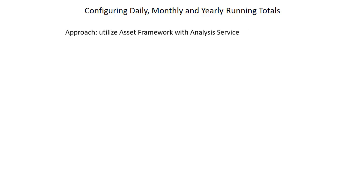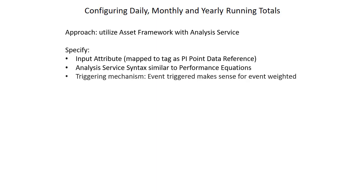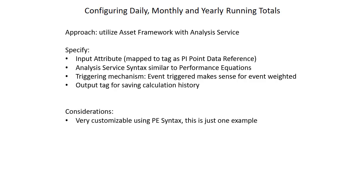The approach we're going to use is to utilize Asset Framework with Analysis Service, or asset analytics. We're going to specify the input attribute, which is mapped to a PI tag as a PI point data reference. The analysis service syntax is similar to performance equations. We're going to be event-triggered, which makes sense for event-weighted calculations, so each time a new event comes in we'll get an updated value. We're going to output it to a tag for saving the calculation history. Because we're using PI syntax, it's very customizable, and this is just one example.